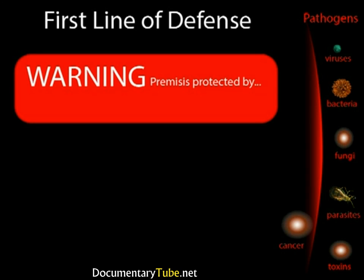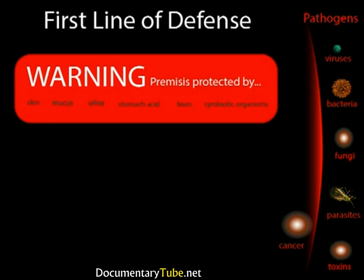The first line of defense is our non-specific immunity system — the defense is not targeted against a specific invader but is an innate defense against a variety of pathogens. We'll take a look at skin, mucus, urine, stomach acid, tears, and symbiotic organisms. These systems act as the first line of defense and either keep pathogens out, as in the case of skin, or try to trap or kill pathogens before they get very far in the body, as in the case of mucus and gastric juice.